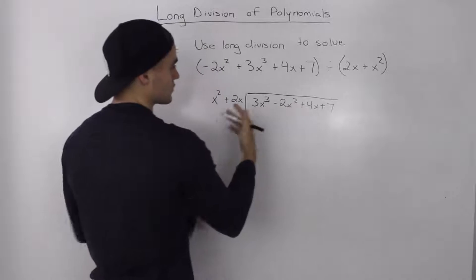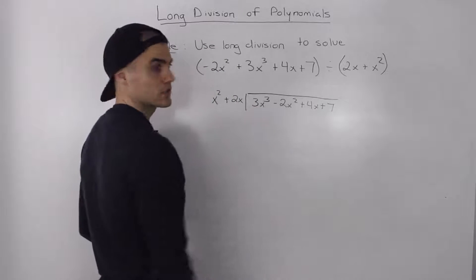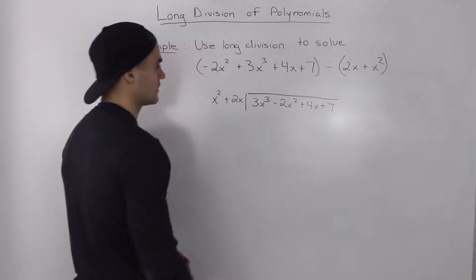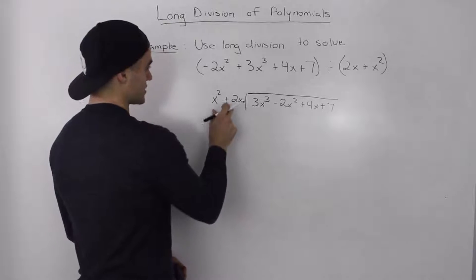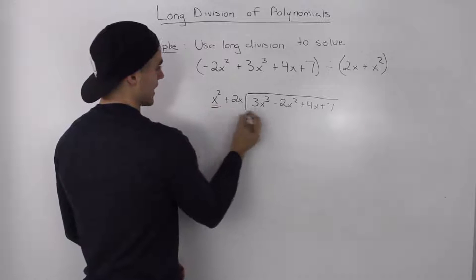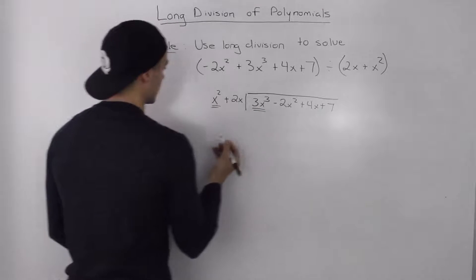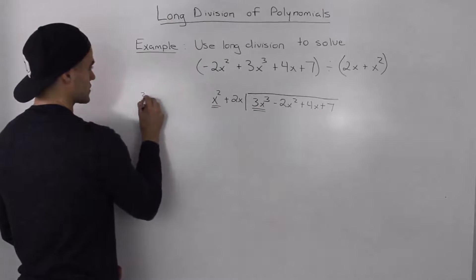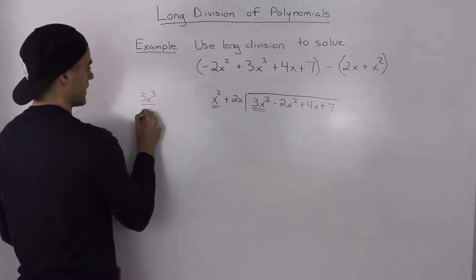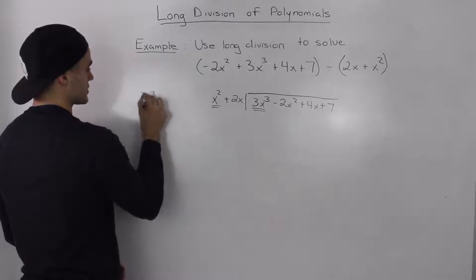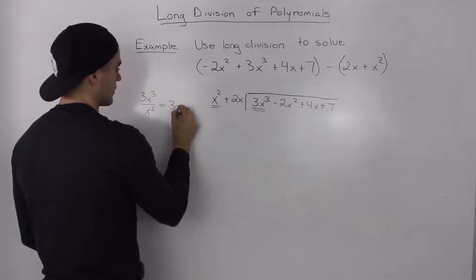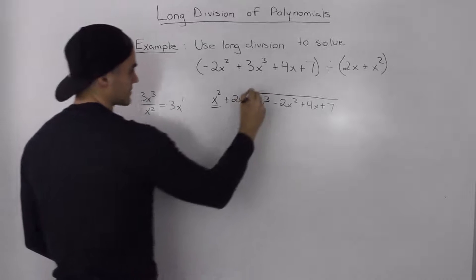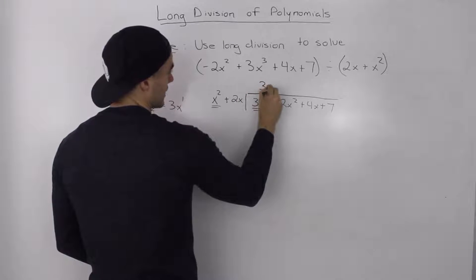Alright, so we took the dividend, divisor, rearranged it, highest degree to lowest degree. And now we could perform the division. Now, first step, see how many times can x squared go into 3x cubed. So 3x cubed, if we do it on the side here divided by x squared, that gives us 3. And then x cubed divided by x squared, we subtract the exponents and we end up with x to the power one, or just x. So 3x goes here.